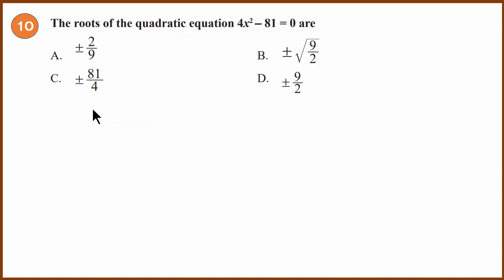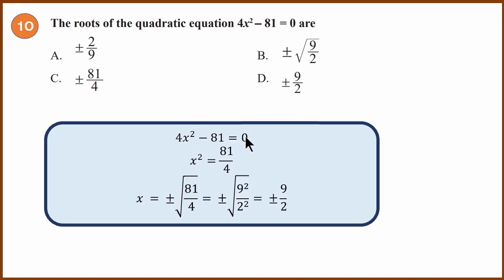Tenth question: find the roots of the quadratic equation 4x² − 81 = 0. Rearranging: x² = 81/4. Taking the square root of both sides gives x = ±√(81/4). Since 81 = 9² and 4 = 2², the square root is ±9/2. The answer is D.